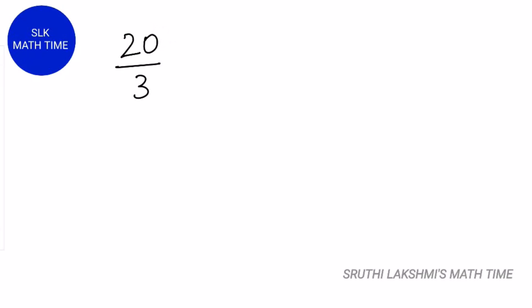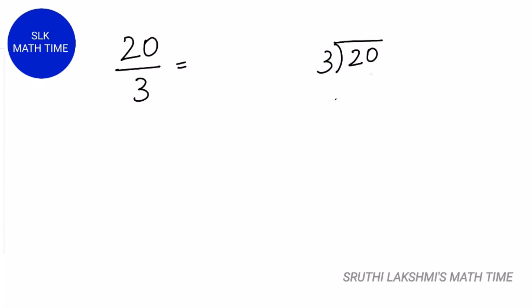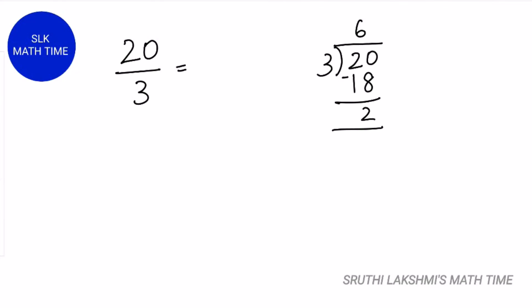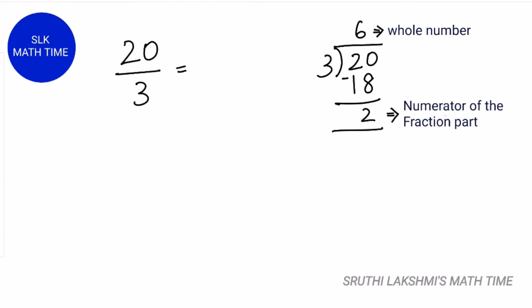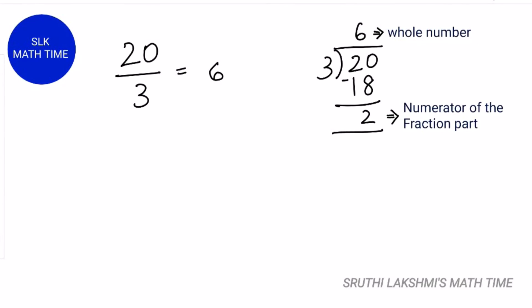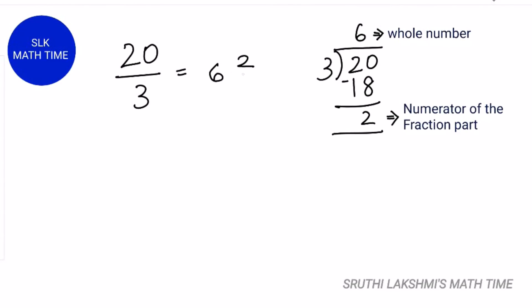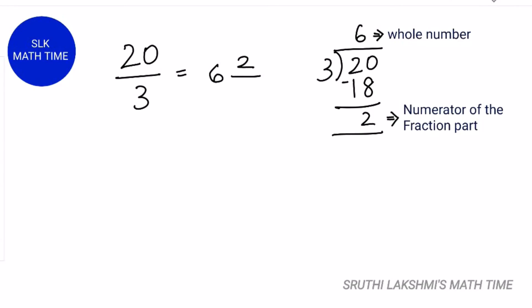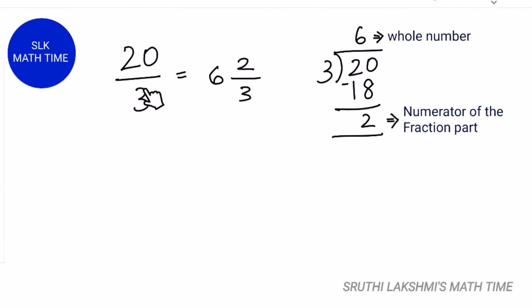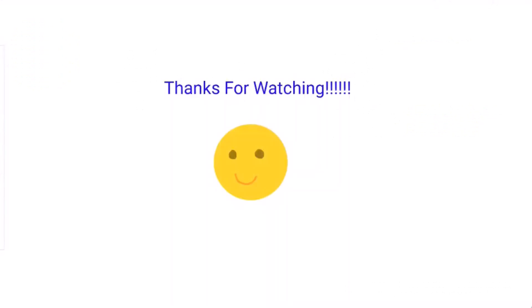Let's see another example: 20 by 3. We want to convert it to a mixed number. We divide the numerator by the denominator: 20 divided by 3. How many 3s fit in 20? 6. So 3 times 6 is 18, and 20 minus 18 gives us a remainder of 2. The quotient, 6, is the whole number, and the remainder, 2, is the numerator of the fraction part. The denominator stays the same, which is 3. So when we convert 20 by 3 to a mixed number, we get 6 and 2 by 3. Thanks for watching!